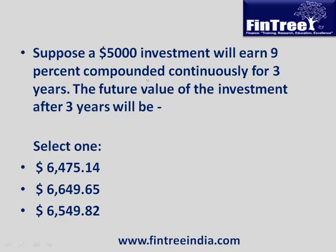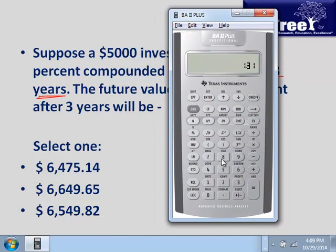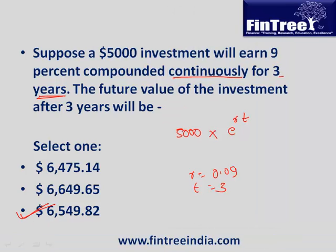Suppose a $5,000 investment will earn 9% compounded continuously for 3 years. What is the future value? We use the formula: 5,000 times e raised to R times T, where R is 0.09 and T is 3. On the calculator: 0.09 multiplied by 3 gives 0.27, then second e-to-the-x gives a future value factor of 1.31. Multiply by 5,000 — the answer is $6,549.